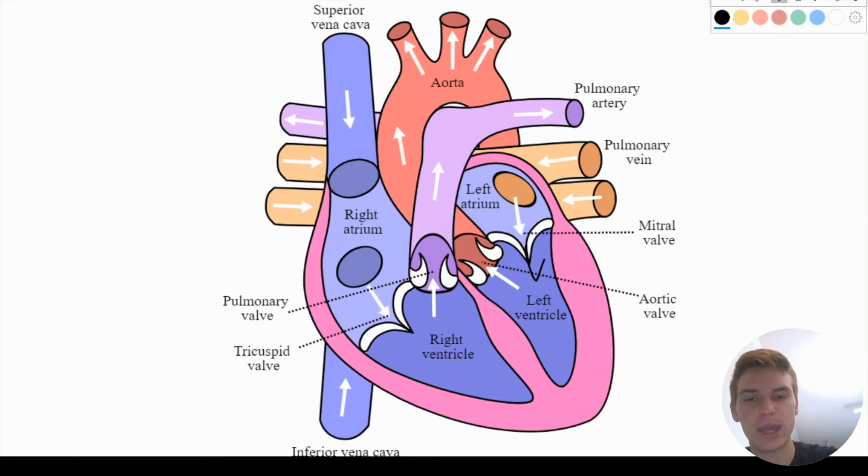The other two valves that we have are called our semilunar valves. Those are going from our ventricles out of the heart, either to the lungs or to the rest of the body. And they actually work in two distinct ways, but you don't need to worry about that so much for the MCAT. What you do need to know for the MCAT is that the first sound happens when our atrioventricular valves close, and the second sound happens when our semilunar valves close.